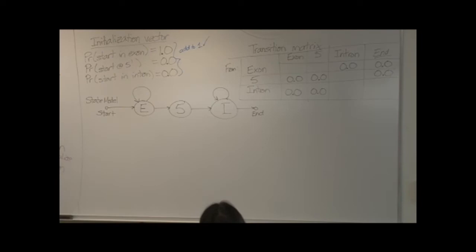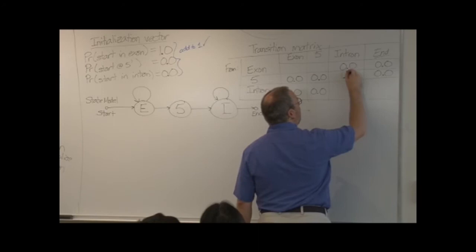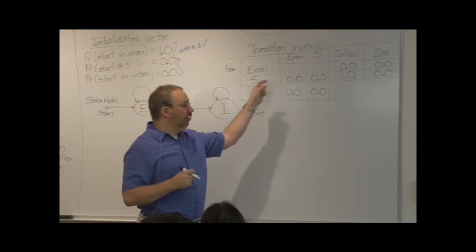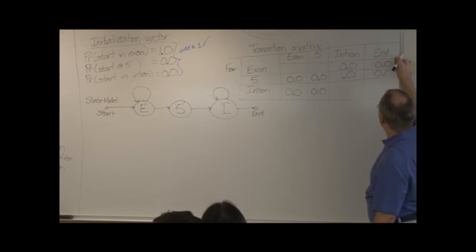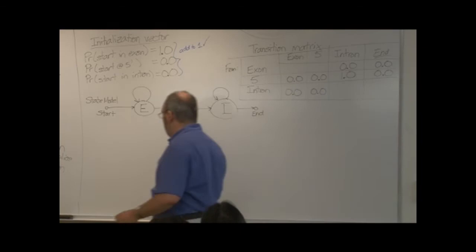One more of these numbers we can immediately fill in. Five-prime to the intron. What's the probability of that? One. Because from the five-prime splice site you have to go somewhere. We've already ruled out the others. So this has a probability of one. And notice what that's telling you is that the sum of this row has to be one. And in fact, the sum of each row has to be one.